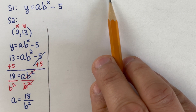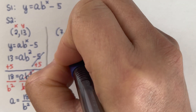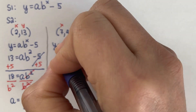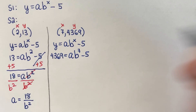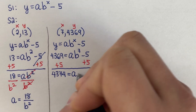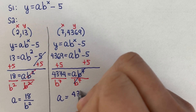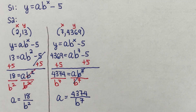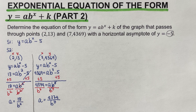Using the second point (7, 4369) with the same method, we get a = 4374 / b⁷. Now we have two expressions for a from step two and we are ready to move on to step three.